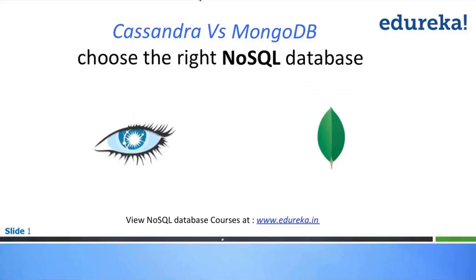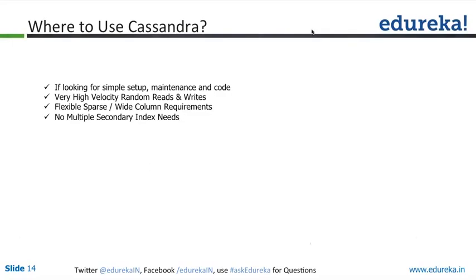Hi everyone. As Moit said, I'm Tulshaker, and I'll take you through the session today. What we are actually going to talk about today is Cassandra and Mongo. Let's understand the most popular ones in the NoSQL field: Cassandra, HBase, and Mongo.